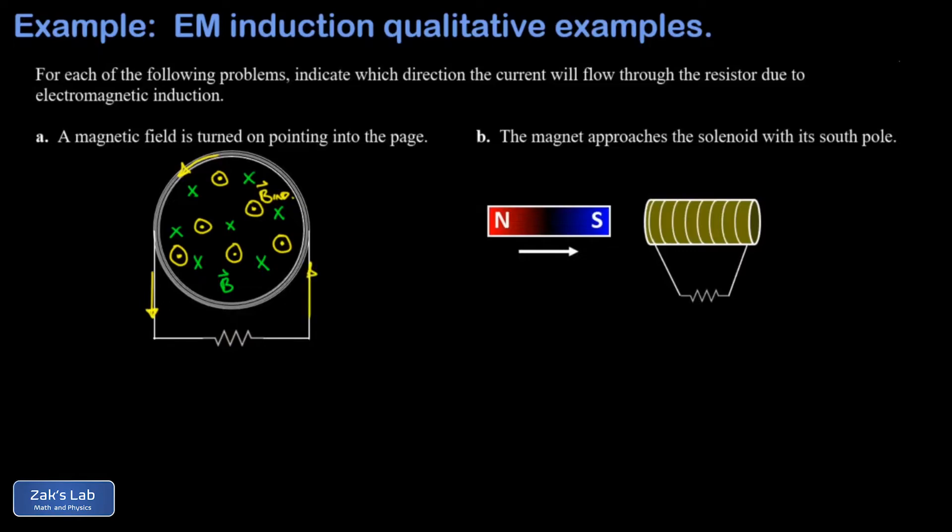Upward current on the right branch and through the resistor in this little loop, the current points to the right. Now in part B, we have a solenoid set up, so that's just another type of coil, it's just a long and skinny one, and we're approaching this solenoid with the south pole of a permanent magnet.